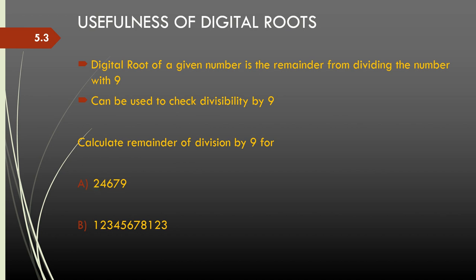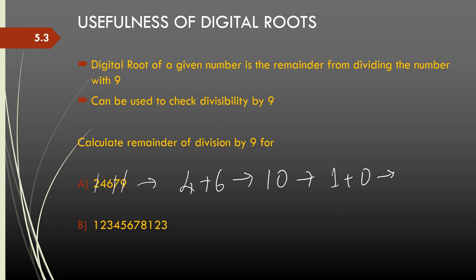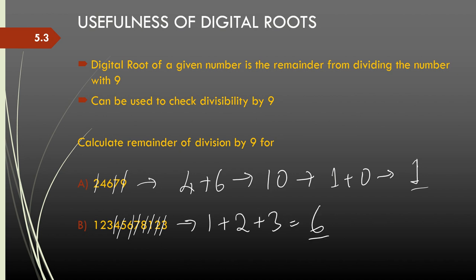For example, if I have to find the remainder of division by 9 for 24679, I find the digital root by cancelling out 9s: the 9 is there, and 7 and 2 add to 9. I'm left with 4 and 6, I add them to get 10, and repeating the process I get 1. So 1 is the remainder when dividing 24679 by 9. If the digit sum is 0 or all digits cancel out, then that number is divisible by 9.